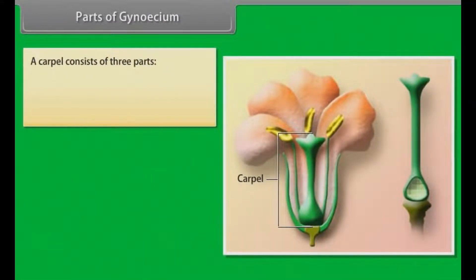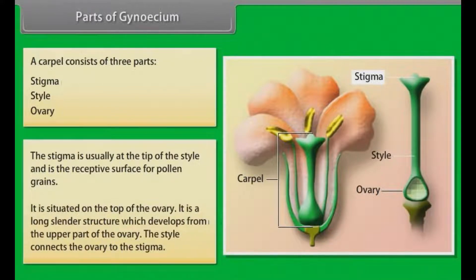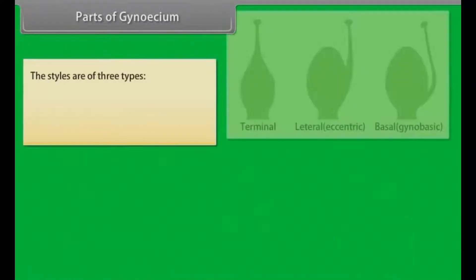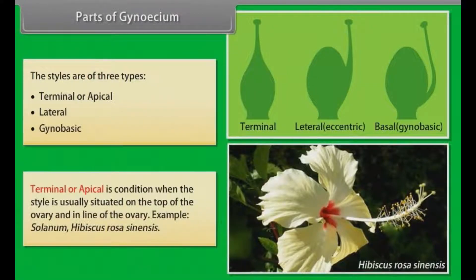Parts of gynoecium. A carpel consists of three parts: stigma, style and ovary. The stigma is usually at the tip of the style and is the receptive surface for pollen grains. The style is a long, slender structure which connects the ovary to the stigma. The styles are of three types: Terminal or apical — when the style is situated on the top of the ovary and in line with the ovary; example, Hibiscus rosa-sinensis. Lateral — when the ovary bends on one side so that the style appears to arise from the lateral side; example, Mango. Gynobasic — when the ovary is four-lobed and the style appears to arise from the depression between the lobes; example, Ocimum sanctum.